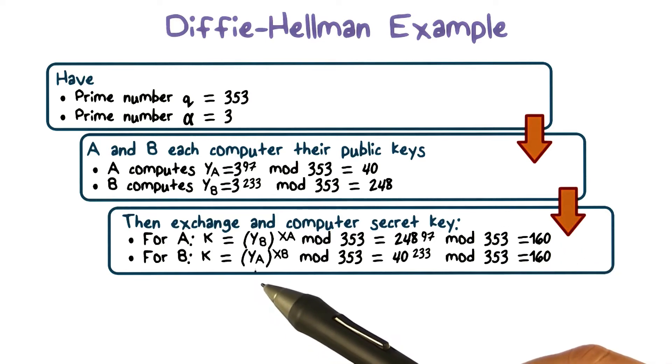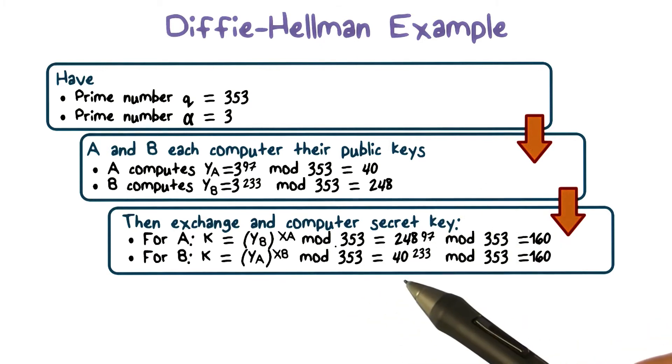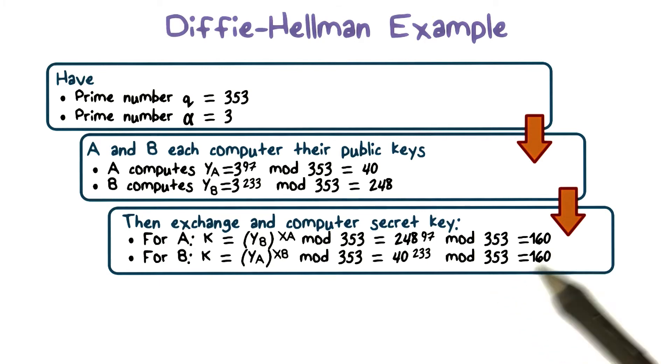Likewise, user B computes yA raised to the power of xB mod q. In this case, it is 40 raised to the power of 233 mod 353, and the result is 160.